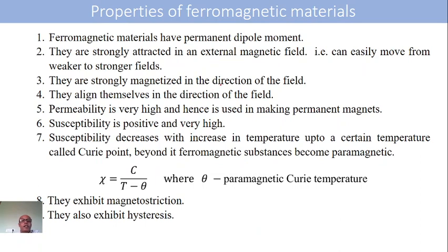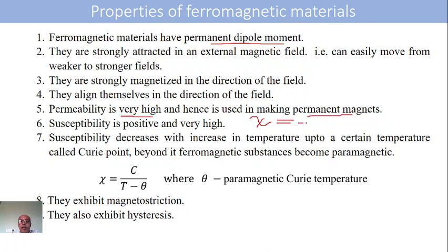Coming to the properties of ferromagnetic materials. These are magnetic materials having permanent dipole moment, similar to paramagnetic materials. They are very strongly attracted in the external magnetic field and will quickly move from weaker to stronger fields, aligning in the direction of the magnetic field when kept in it — they are very strongly magnetized. The permeability is very high, and because of this high permeability, ferromagnetic materials are used in making permanent magnets. Susceptibility is positive and very high — it was positive but low in paramagnetic materials.